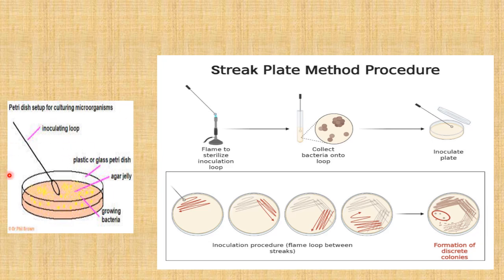These are the materials needed to culture microorganisms. We have the inoculating loop, which is used to collect a sample from a sample source, especially if it is in a test tube. We sterilize the inoculating loop, dip it into the sample, and then streak it on the petri dish. The petri dish is this cylindrical material made of plastic, not glass — it is transparent and has a cover. This is the agar jelly, which is the culture medium, and the color shown here indicates the growing bacteria.